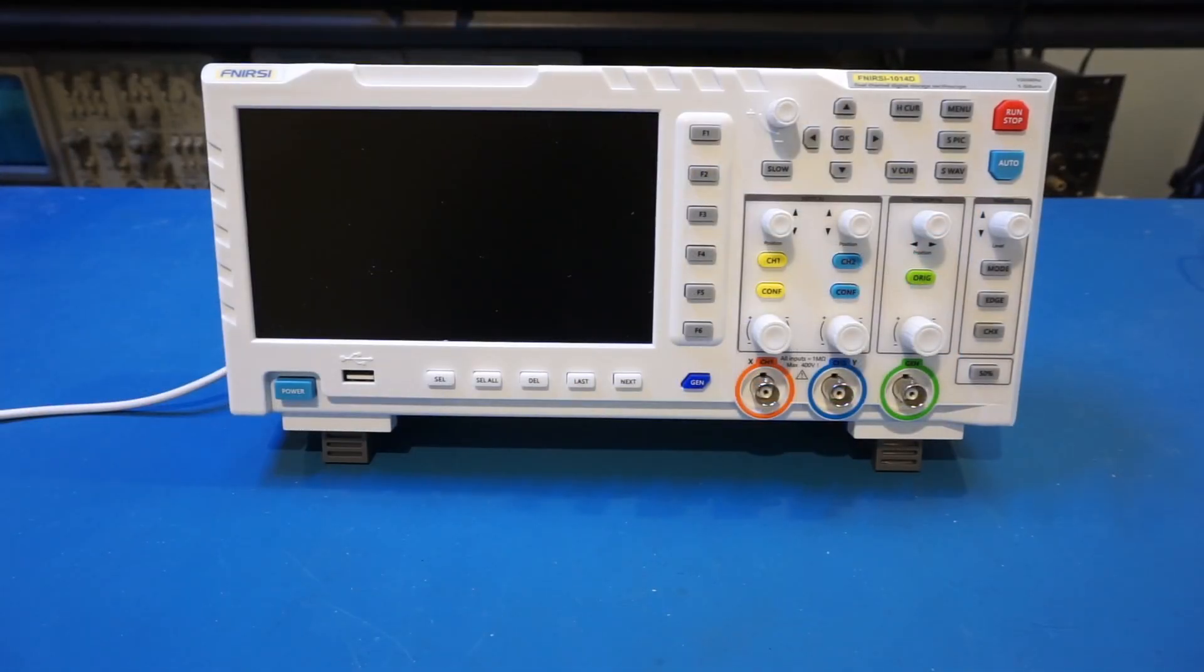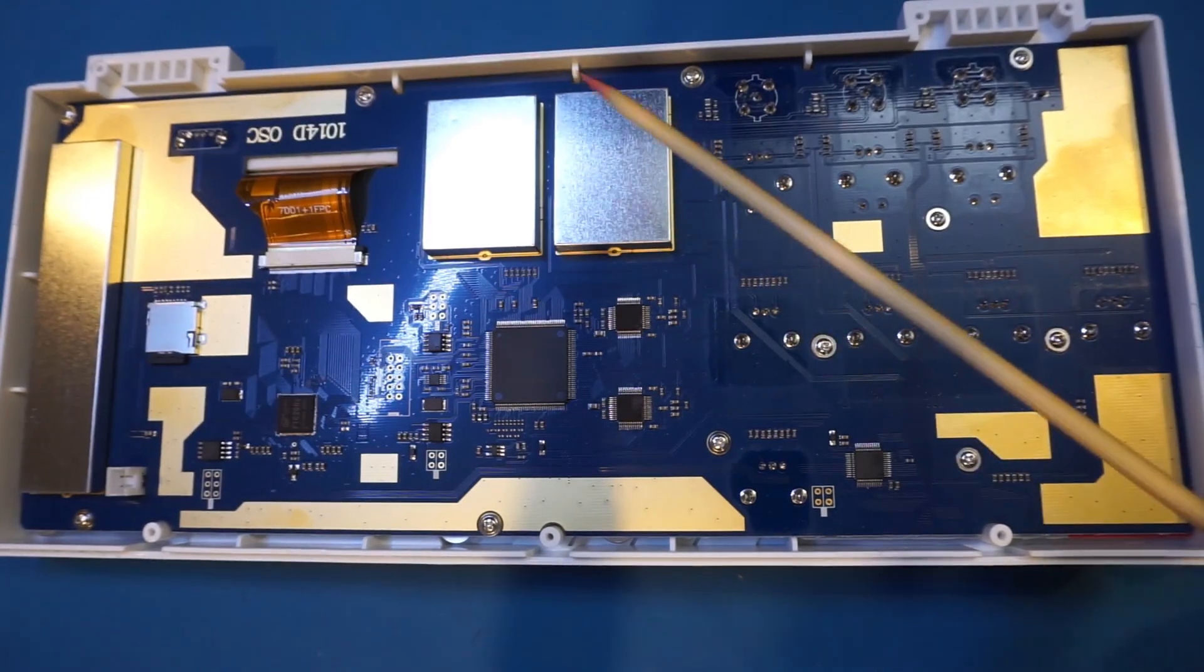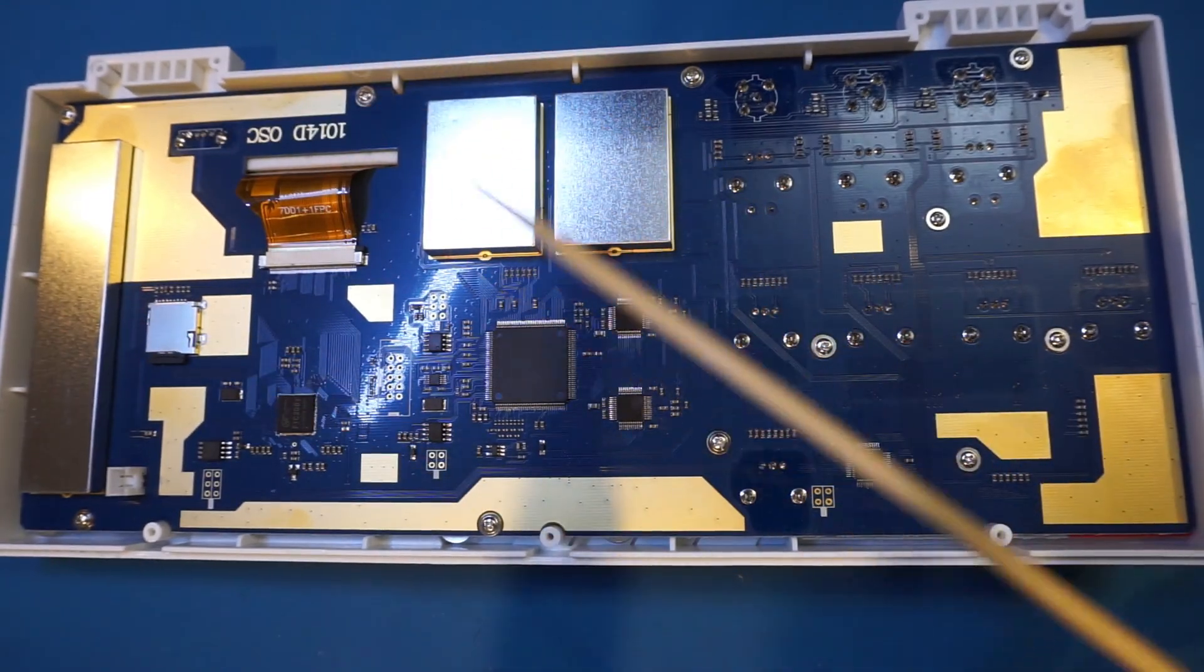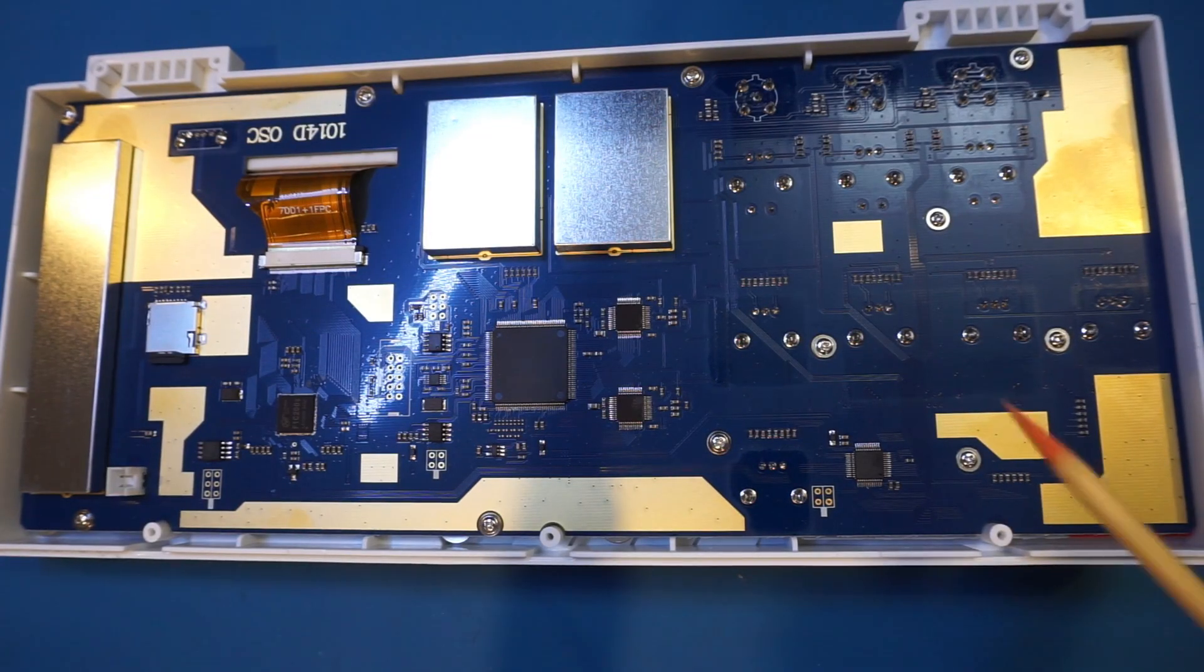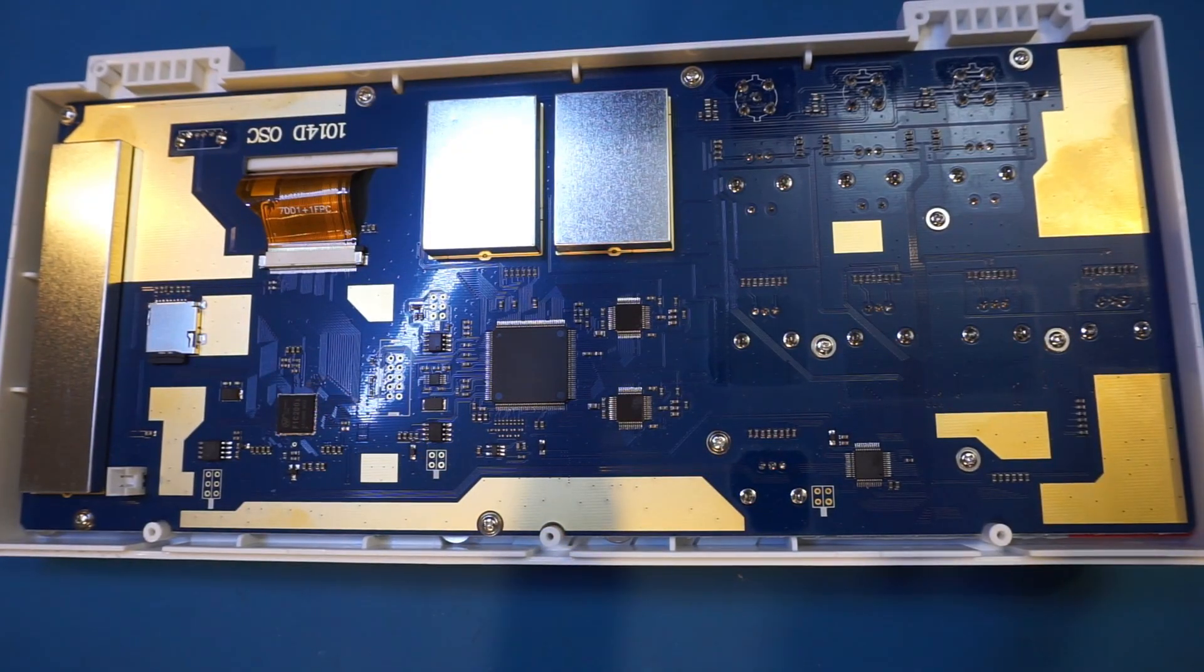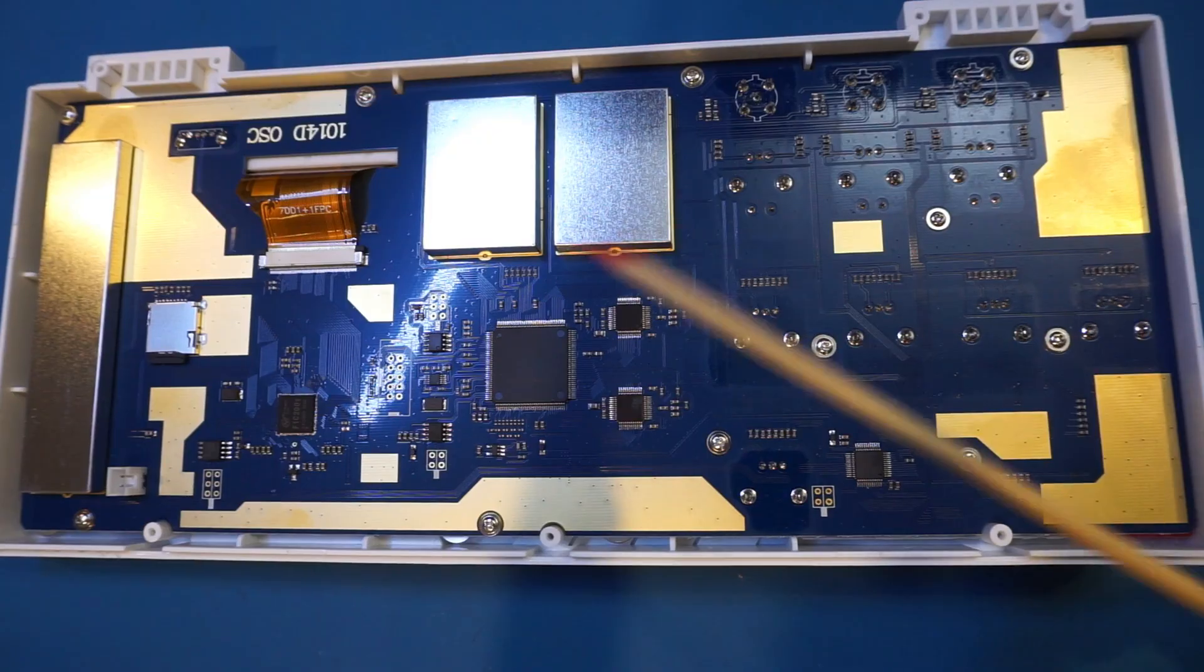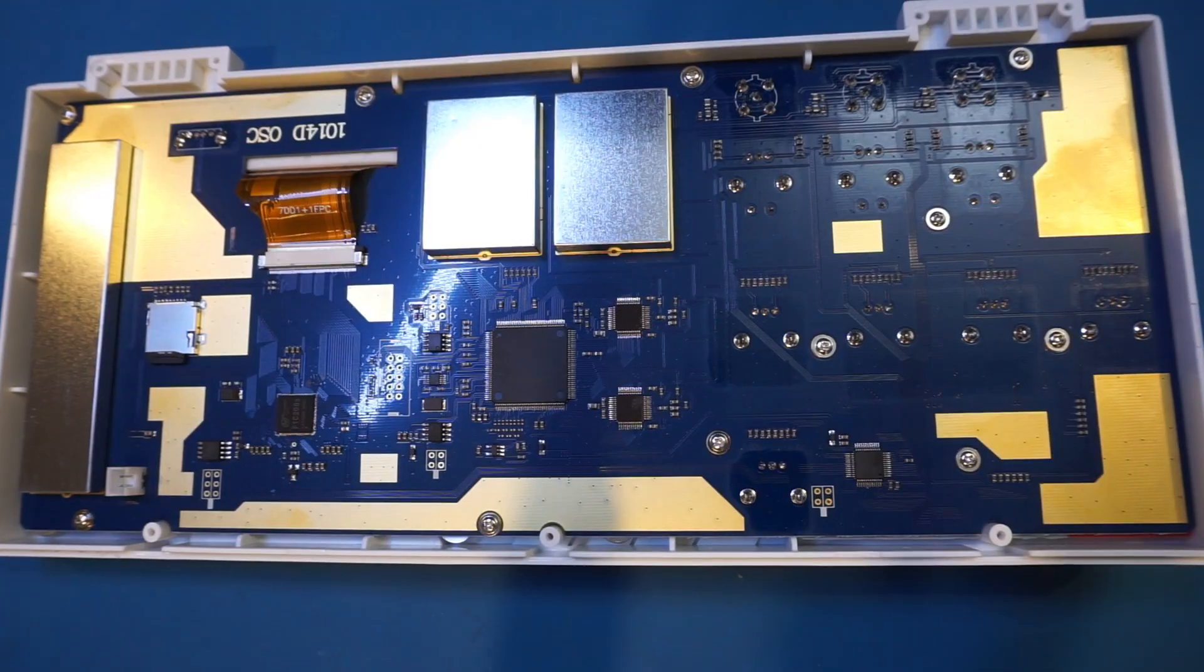Now let's proceed with the teardown. Given what we have seen in terms of performance, my expectation is pretty low, but let's open it up and take a look. And yep, it is pretty much what I expected. If you look at the circuit board, there's no trace length matching for high speed design whatsoever. And by the look of it, the firmware is actually stored in this micro SD card. The main microprocessor used here is an F1C200S, which is a 32-bit microprocessor based on the ARM 9 CPU architecture.